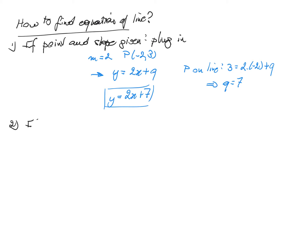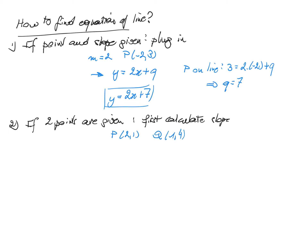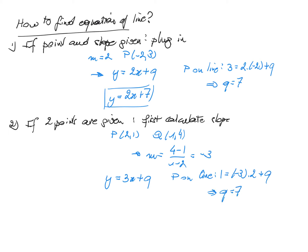If on the other hand you only know two points — since two points define a line — you first calculate the slope and then use the previous method. Assume we have points P=(2, 1) and Q=(1, 4). The slope m is (4 minus 1) divided by (1 minus 2), which is minus 3. Plugging in: y equals -3x plus q, and using point P: 1 equals minus 3 times 2 plus q, so q equals 7. The equation of the line is y equals minus 3x plus 7.